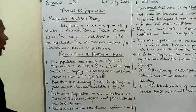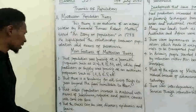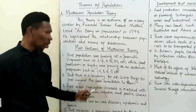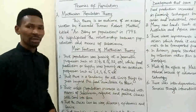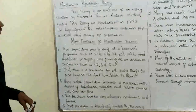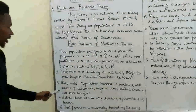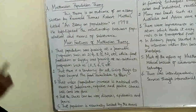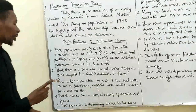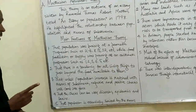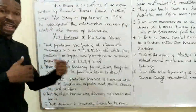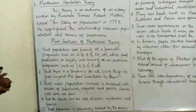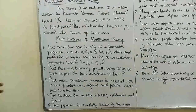Another postulation of Malthus was that there is a tendency for all living things to grow beyond the food available to them. And then the third feature is that unless population increase is matched with the means of sustenance,